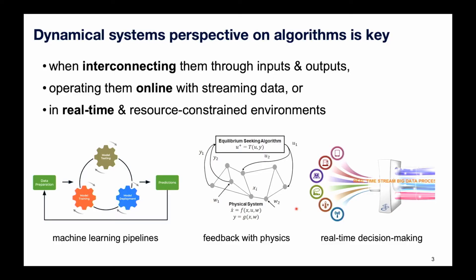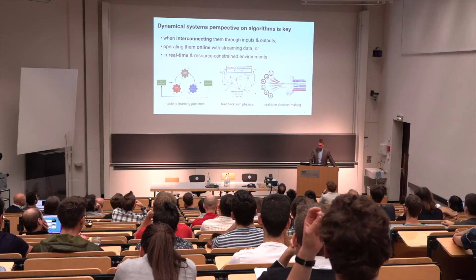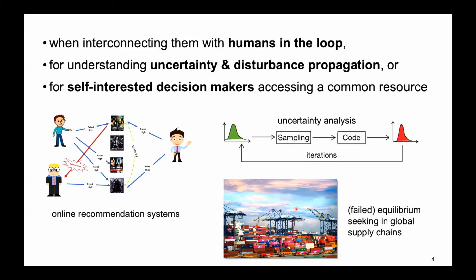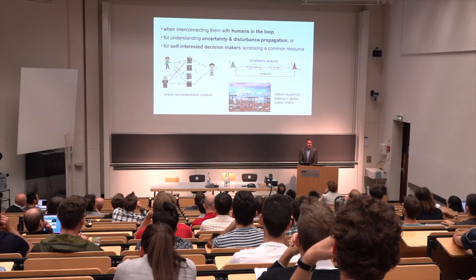MPC is another example, or whenever you do real-time decision making based on streaming data. The issues you typically face are that you have to operate online algorithms in real time and resource-constrained environments with streaming data. So an algorithm is not just a monolithic piece of code — algorithms are ever more part of our daily reality. Whenever you sign onto the internet you are subject to recommendation systems that learn about your behavior to display ads, which is essentially a gigantic reinforcement learning loop that you're part of whether you like it or not.